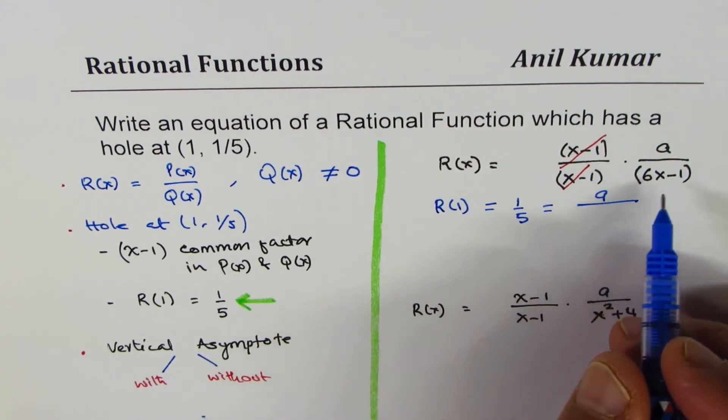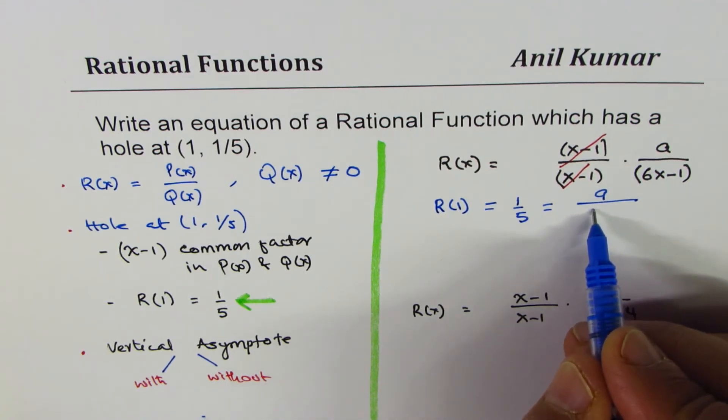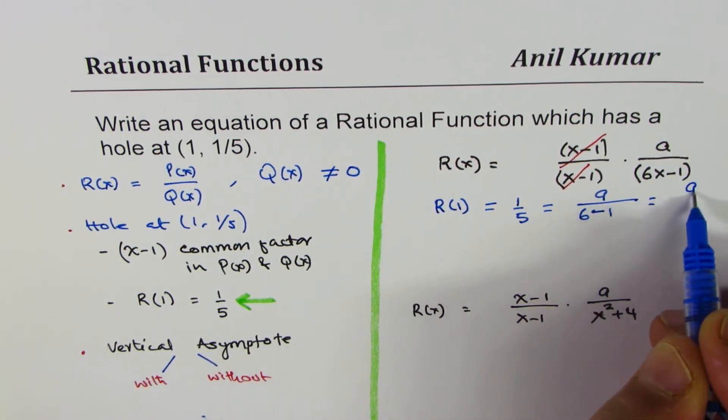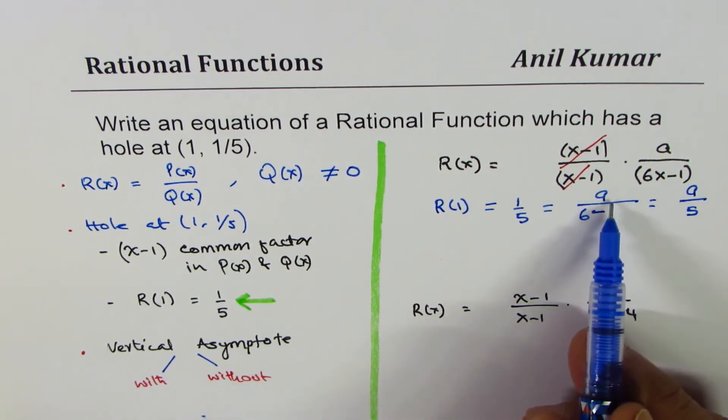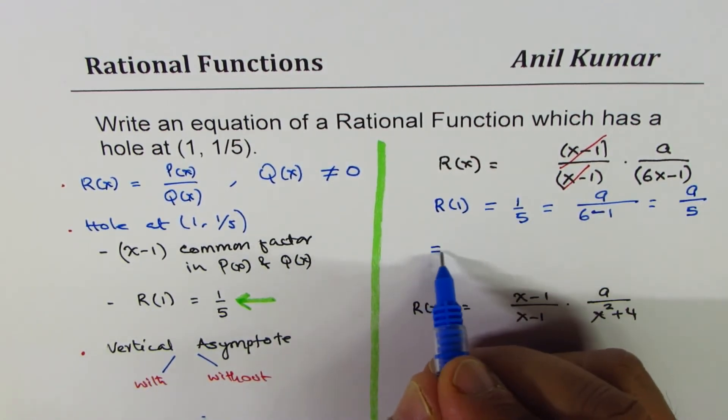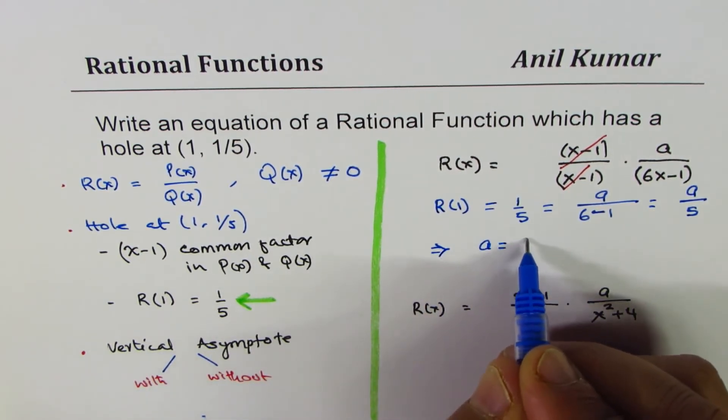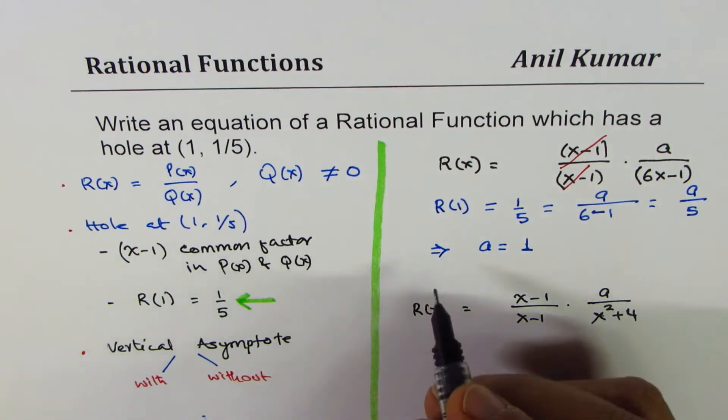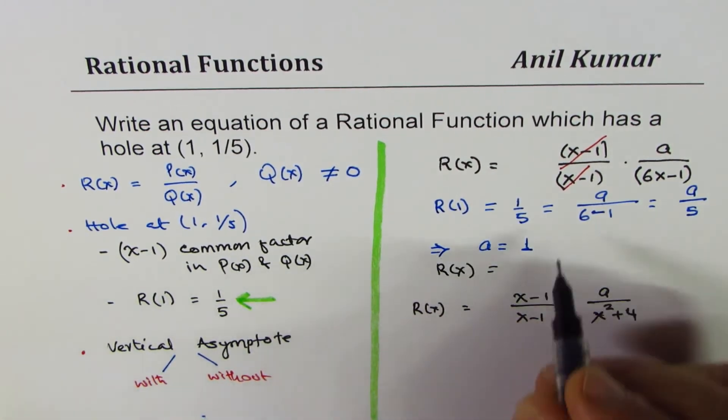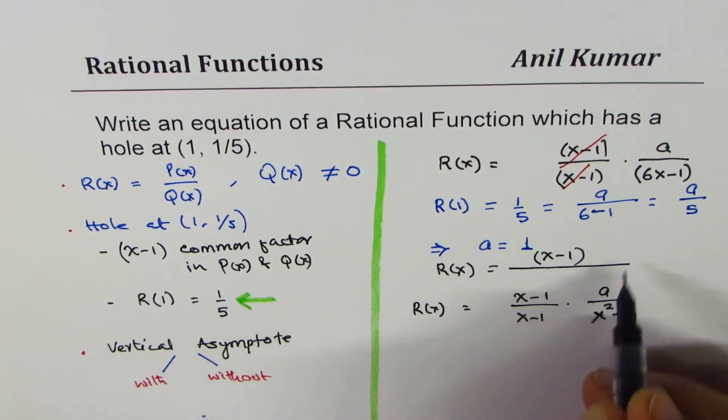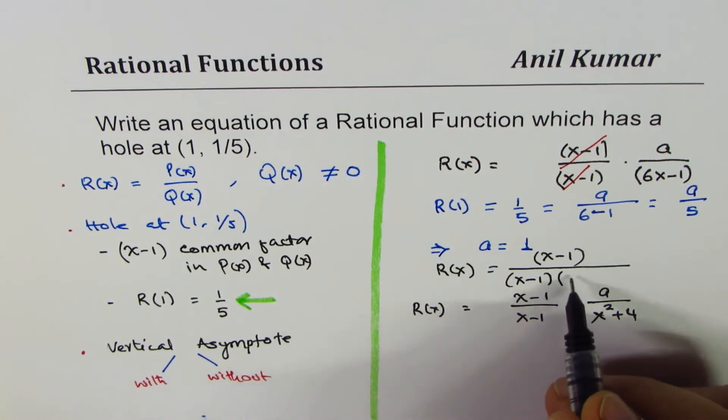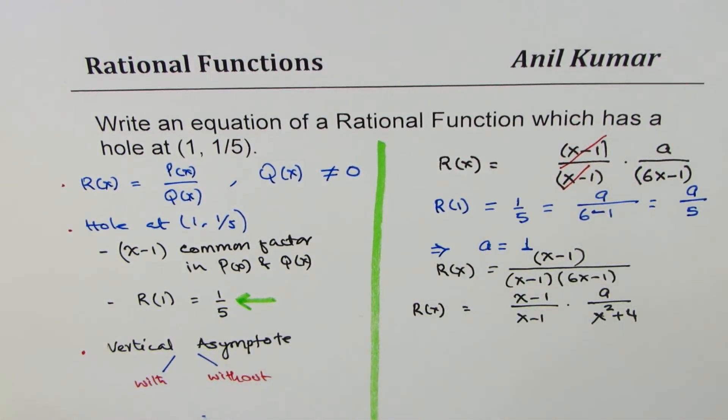So we get 'a' equals... and here if I substitute 1, I do get 5. Let me write 6 minus 1, which is 5. So we get a/5. If you compare here, clearly 'a' is equal to 1. Therefore, we have our solution, which is the function R(x) = (x-1) / [(x-1)(6x-1)].